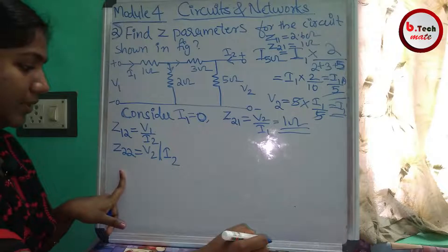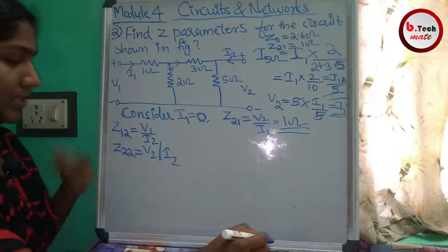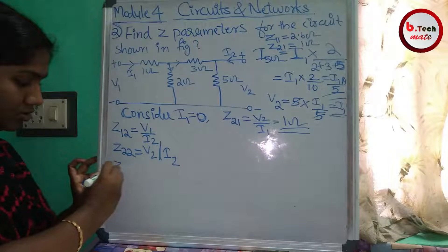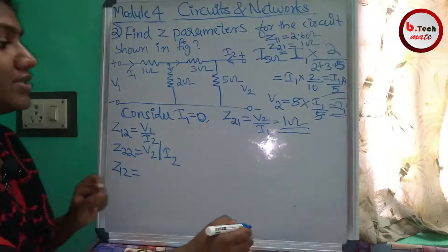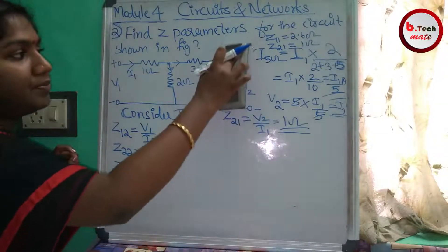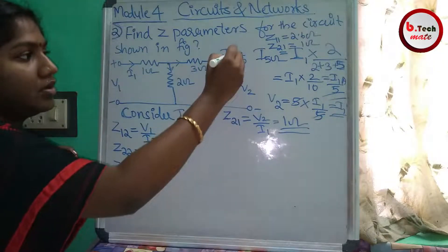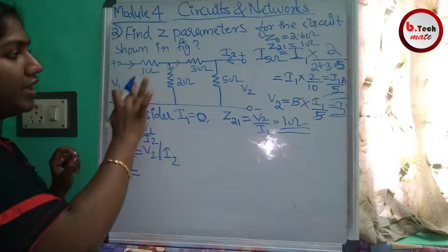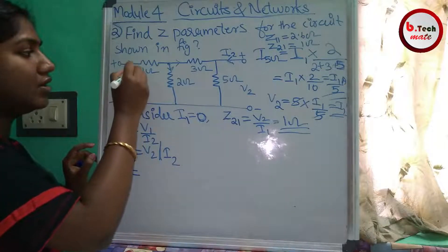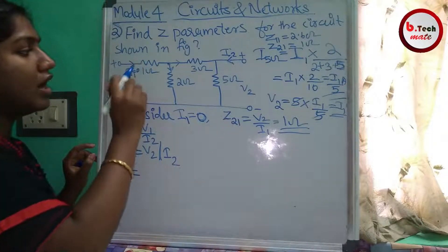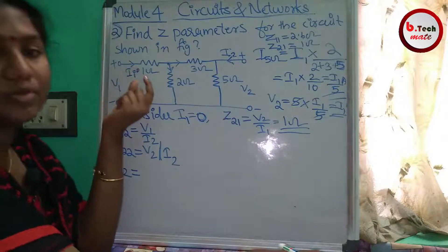Let us start with Z12. We open the input port so I1 equals zero. With I1 equal to zero, the input port is open-circuited. We have the 1 ohm resistance connected at the input side.